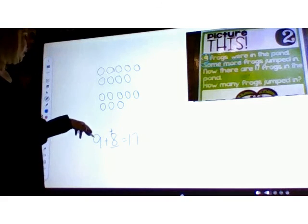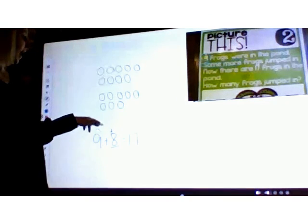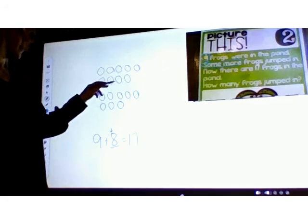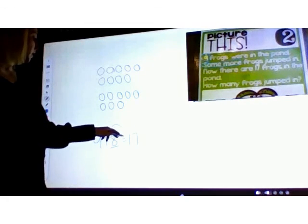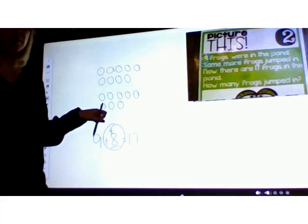They told me in my story that I have nine frogs first in the pond, and that some more came, and they told me that I had 17 at the end. So 8 is the number I didn't know, and that's my answer.